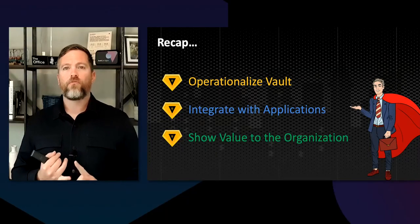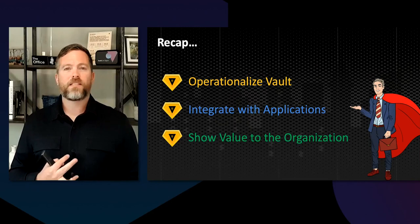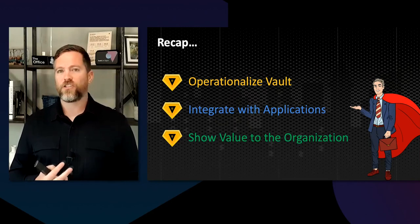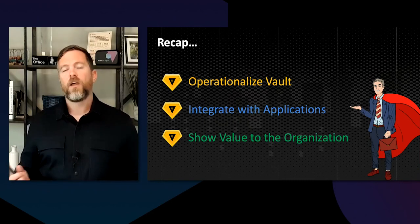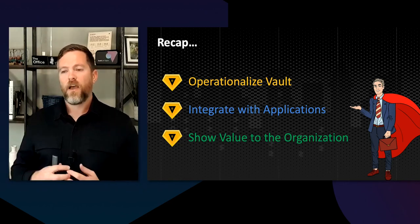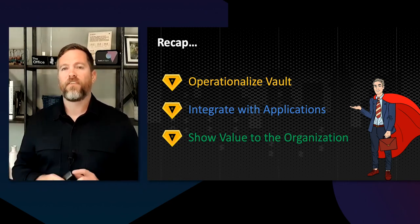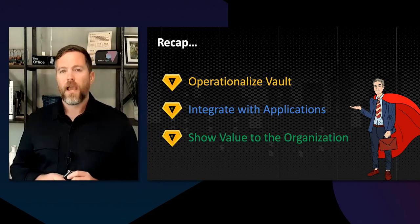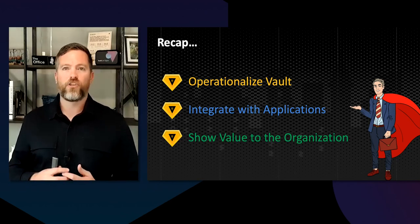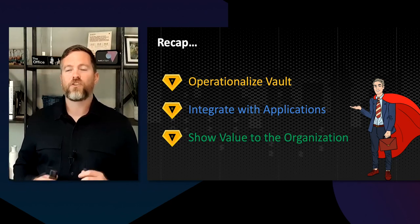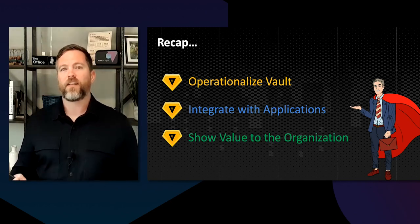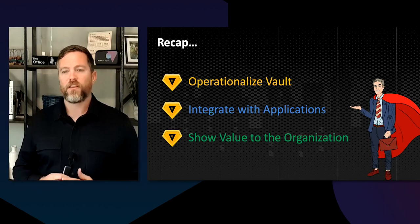So a quick recap: first you want to operationalize Vault — get it up and running quickly, don't waste a lot of time, engage a partner or HashiCorp directly, use community resources. Then integrate with your applications quickly: move those static secrets in, change them to dynamic, and start thinking about the long-term effects of integrating applications into Vault. And once you get success, show that value to the organization. I hope this quick presentation gives you some ammo as you start to deploy Vault within your organization and gain a lot of value.